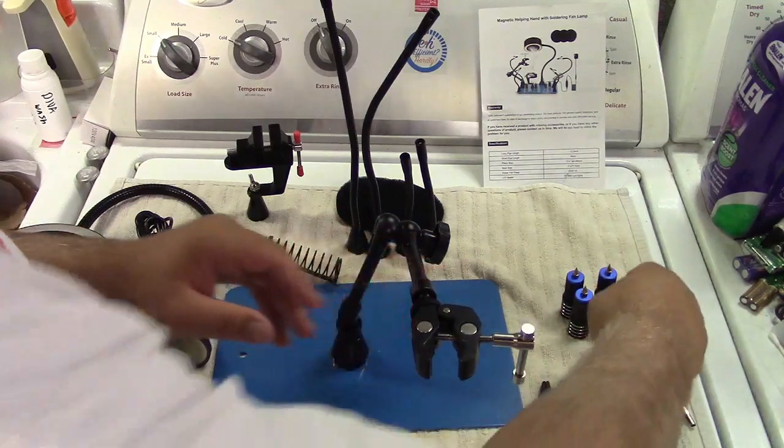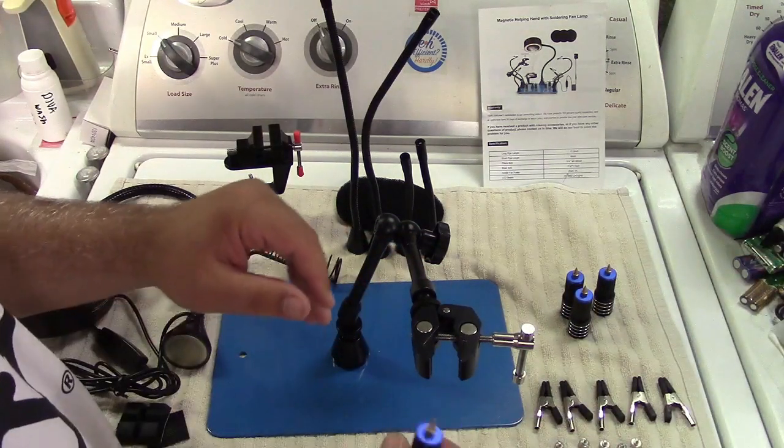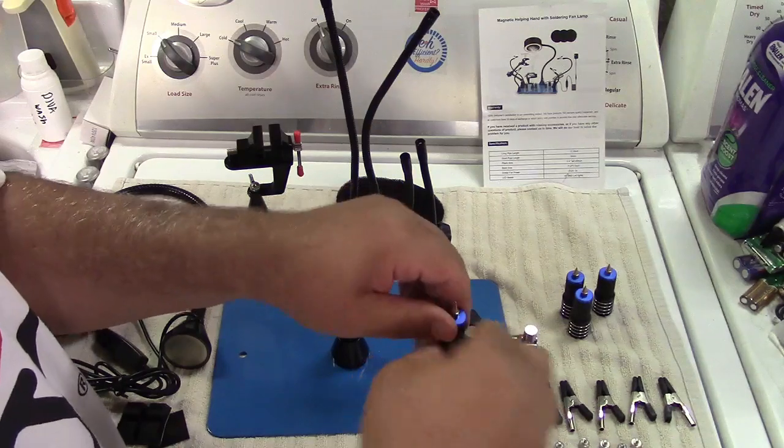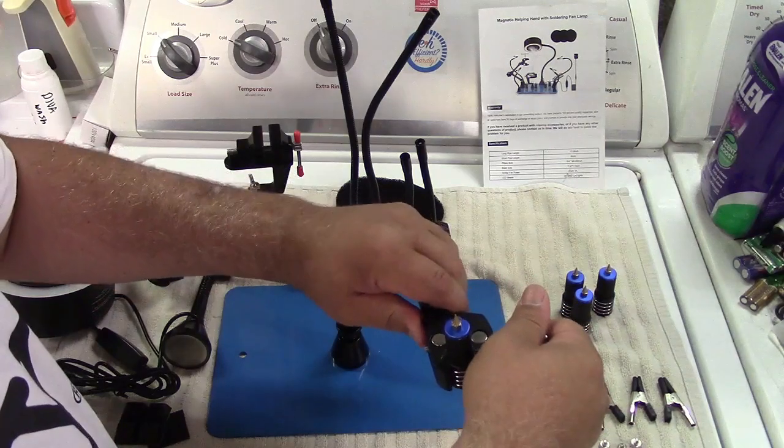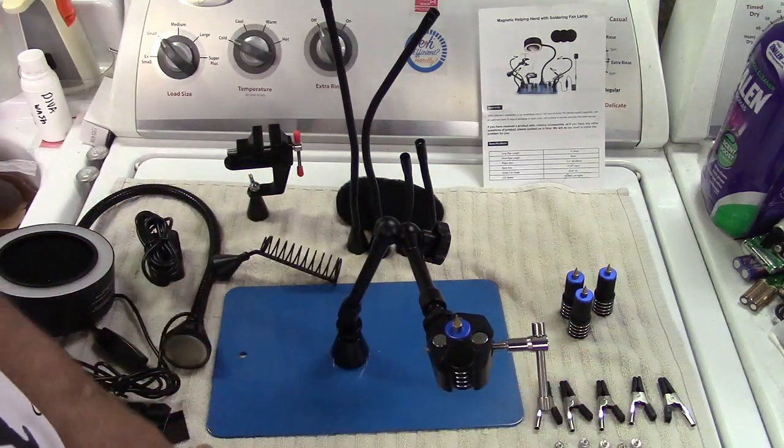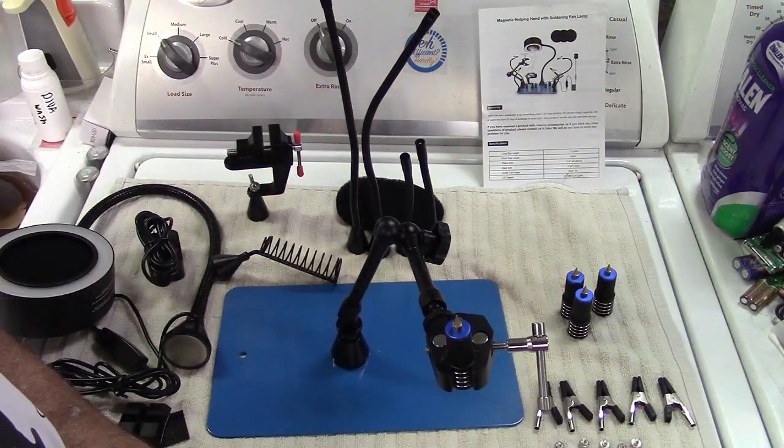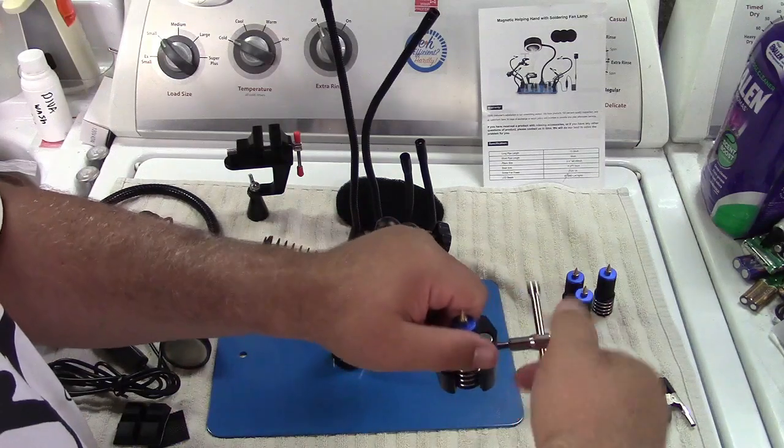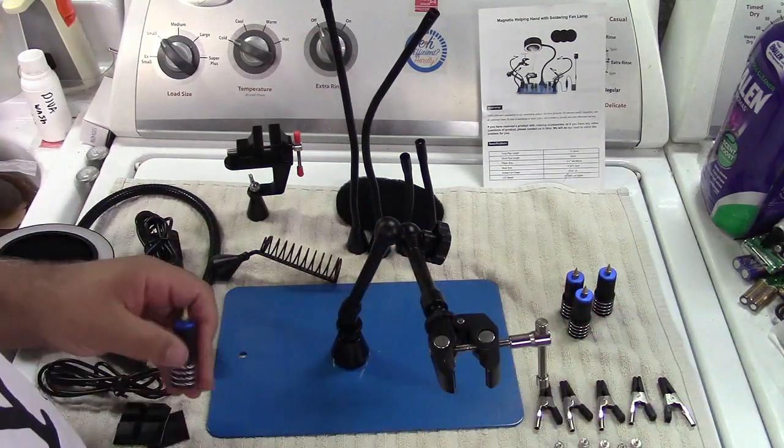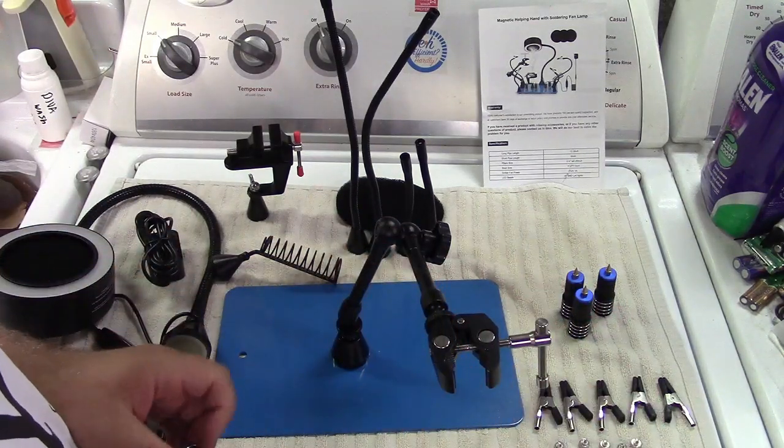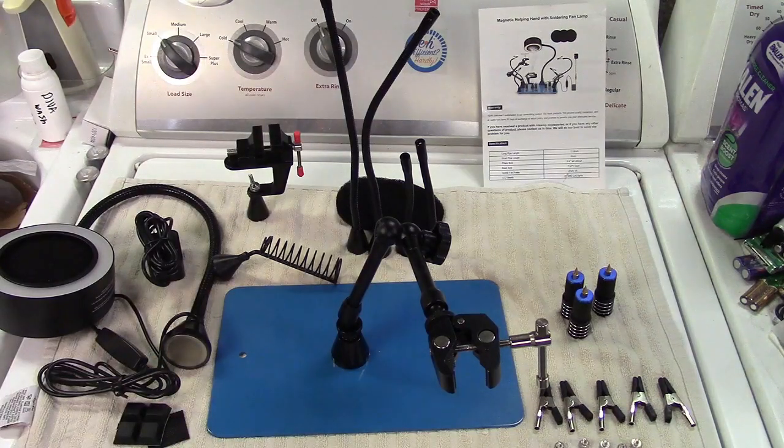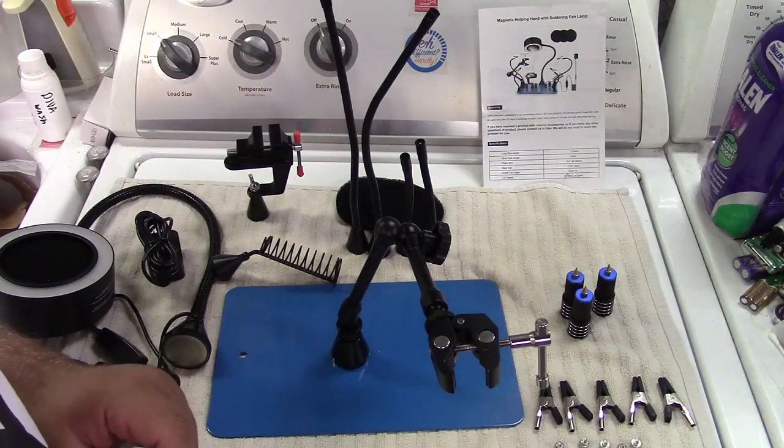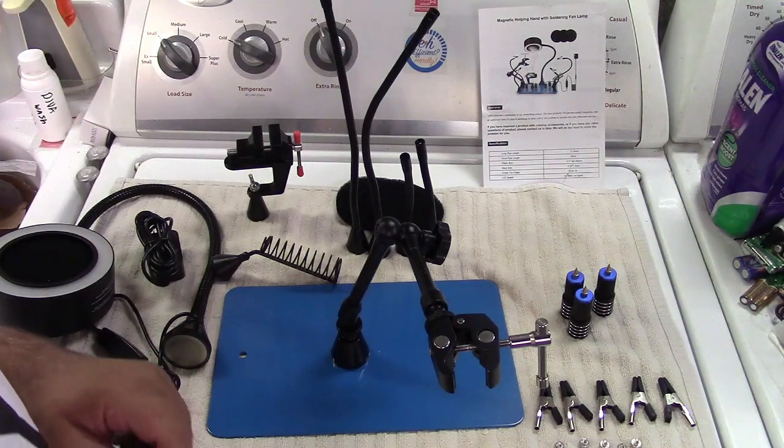And the clamp you can loosen, and we'll stick this guy in there for example. That can hold that right there just like that. So you can work on that or whatever you want to do. This also can be used to hold a hot air gun if you're going to be doing a rework or anything like that on circuit boards. You can put your hot air gun in there, which is nice and convenient.